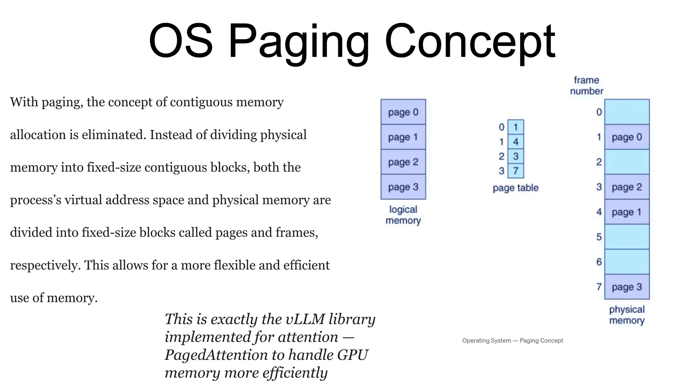Then comes the concept of page attention - it comes to the rescue. For understanding page attention, you need to first understand the OS paging concept. With paging, the contiguous memory concept is eliminated. We're dividing the physical memory into fixed-size contiguous blocks. Both the virtual address and physical memory are divided into fixed-size blocks called pages and frames. This is the logical memory, the page table, and the physical memory - it gets mapped into each other using this page table. This is exactly what the vLLM library is doing for attention. Page attention handles GPU memory more efficiently.